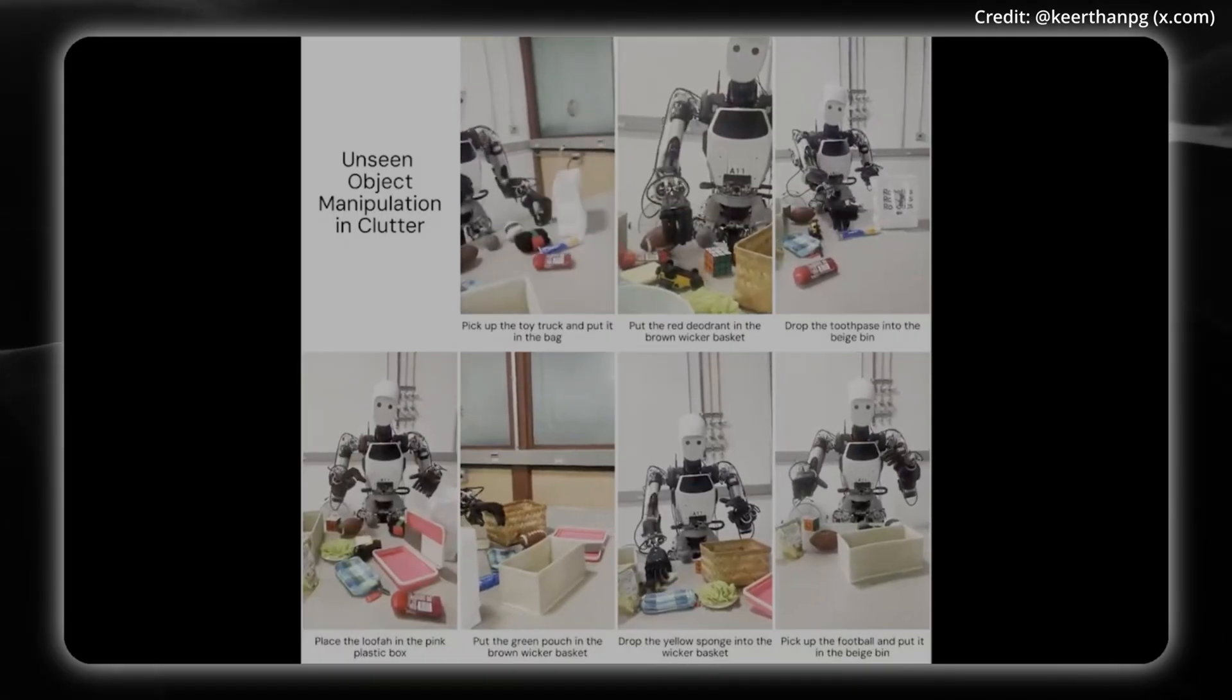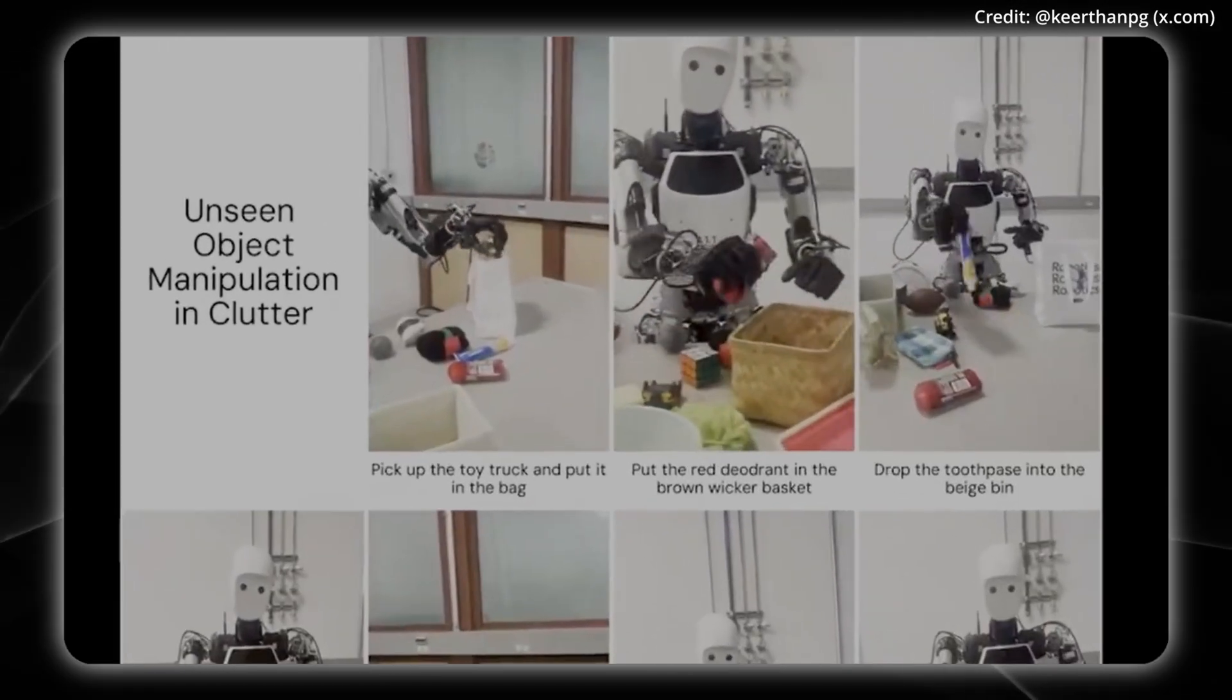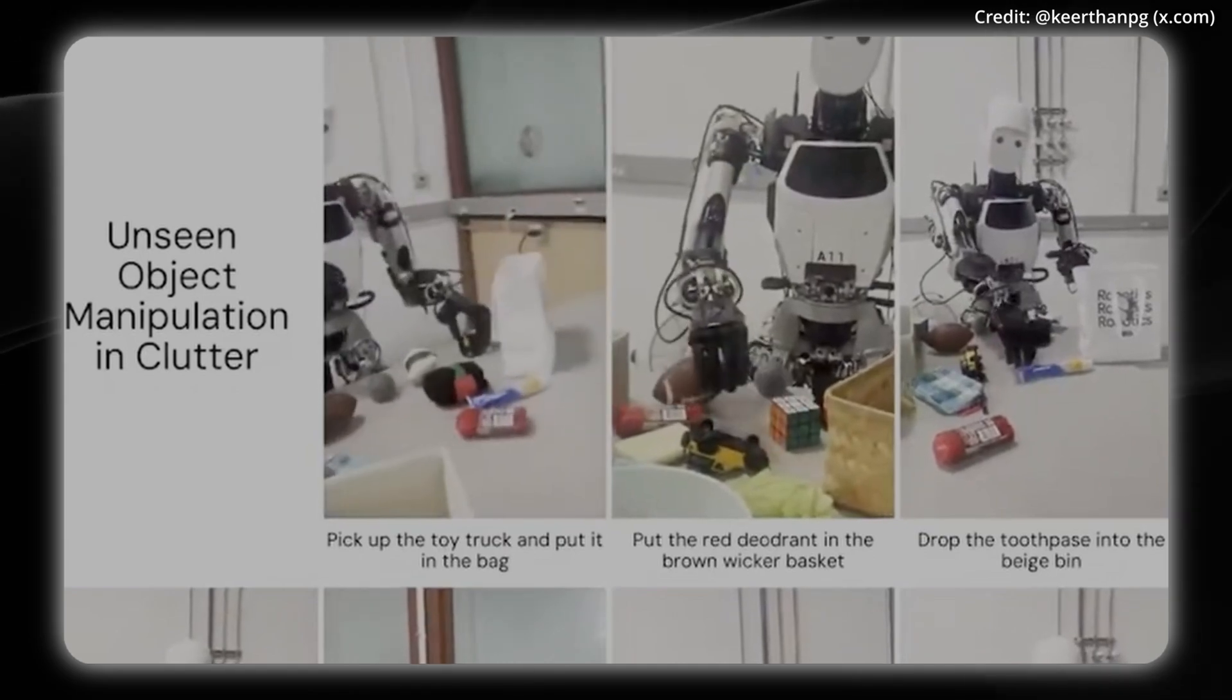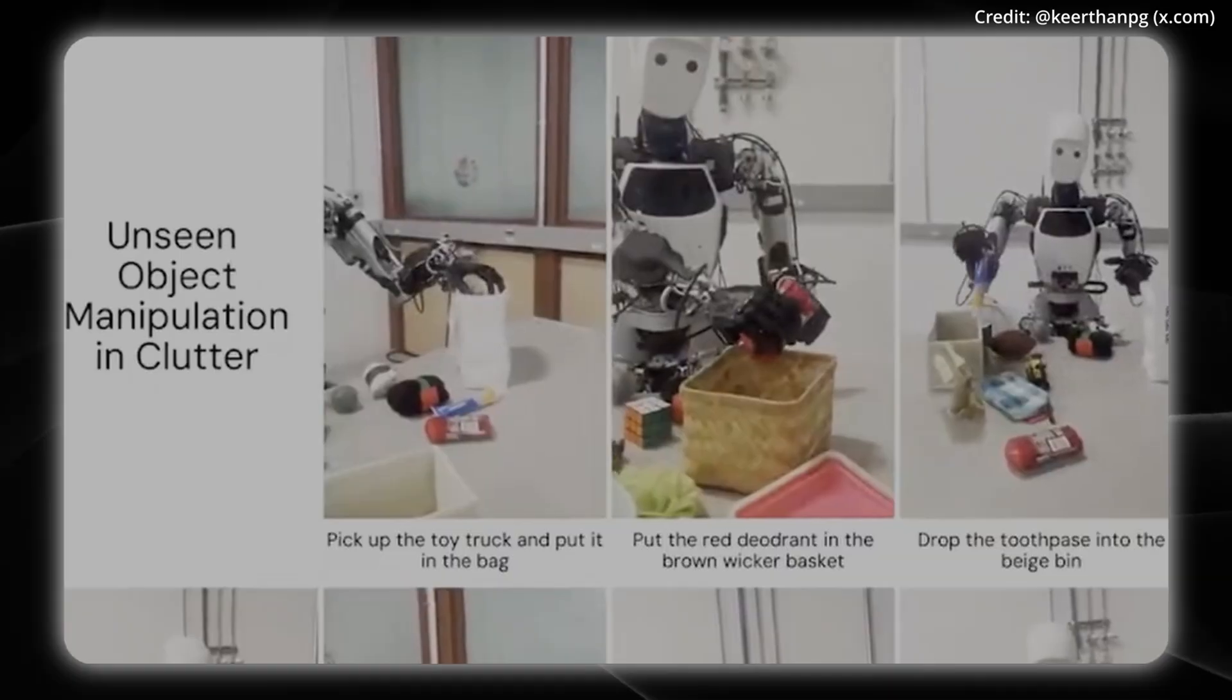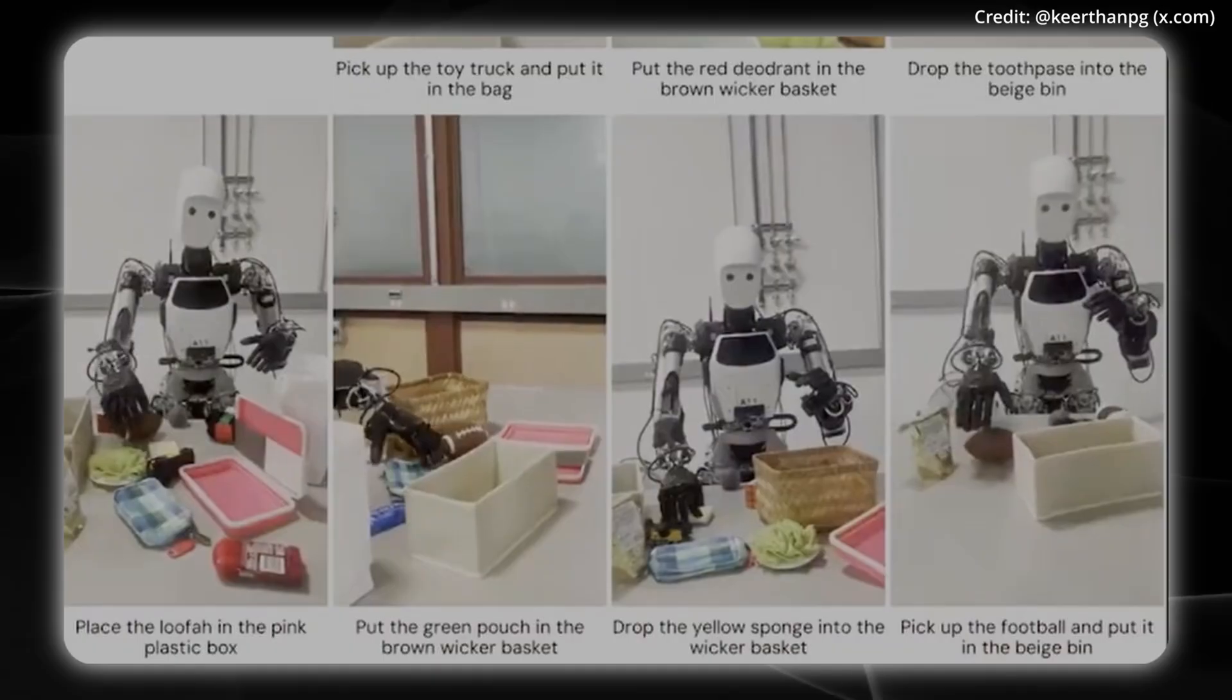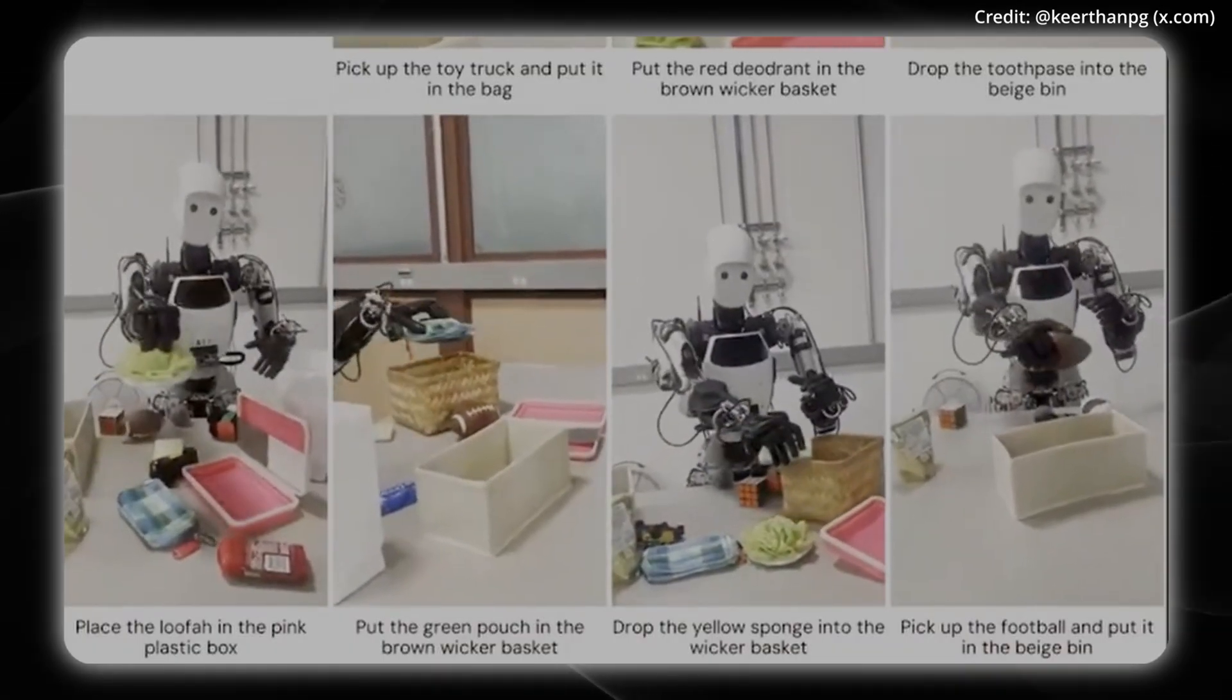And they also showed off the Apollo robot using Gemini Robotics 1.5, doing unseen object manipulation with a bunch of clutter, where maybe these different objects that it's manipulating are occluded from its cameras by the mess in front. But regardless, it's able to take these different text prompts, drop the yellow sponge into the wicker basket, and figure it out step by step here with just one hand. But you saw before, it can also do it with two.